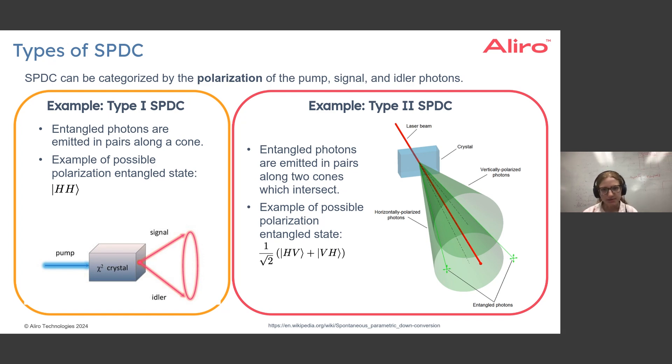One example of a possible polarization entangled state from here would be 1/√2 (|HV⟩ + |VH⟩). So we now have this mixing of the polarizations where H is horizontal polarization, V is vertical polarization, and we have a superposition state, specifically an entangled state for the polarizations of the signal and idler photons.